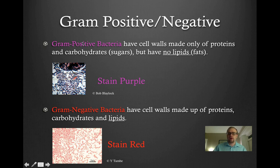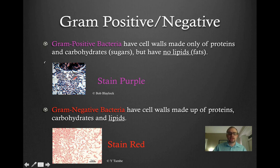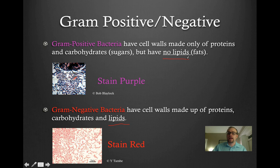What this means is that gram-positive bacteria have cell walls that are made only of proteins and carbohydrates. So they have proteins and sugars in their cell walls, but they do not have lipids — so there are no fats — in their cell walls. The other main type of bacteria is gram-negative bacteria, and these bacteria have cell walls made up of proteins, carbohydrates, and lipids. So the main difference with gram-negative bacteria is that they also have lipids in their cell walls, whereas gram-positive bacteria do not.